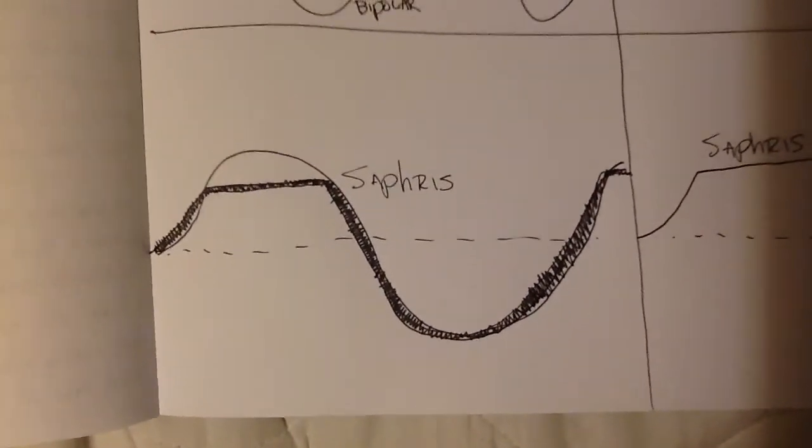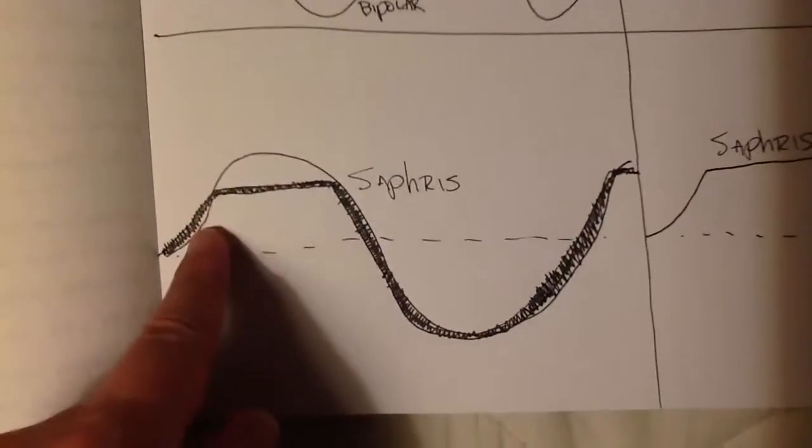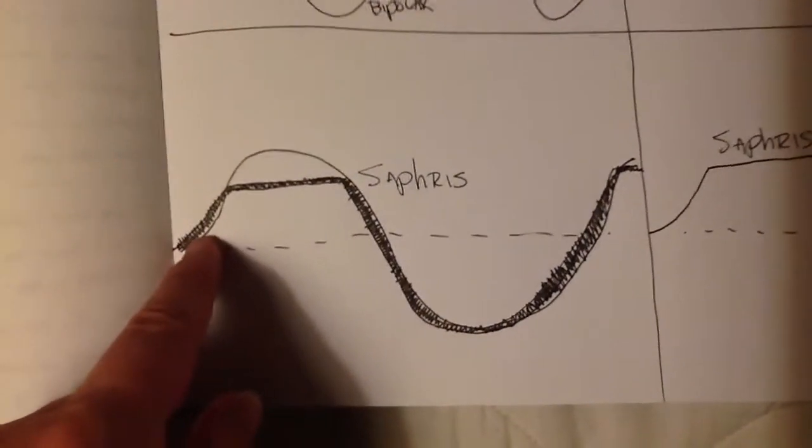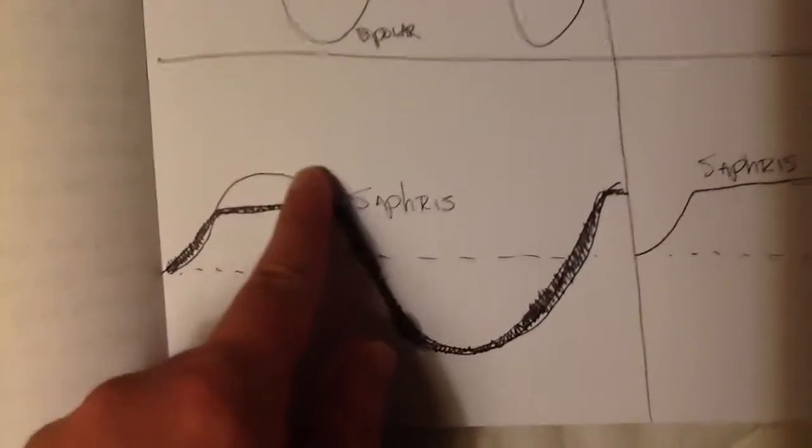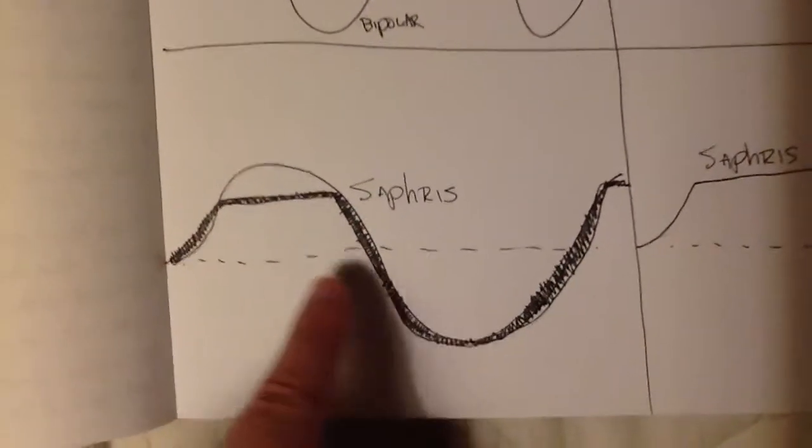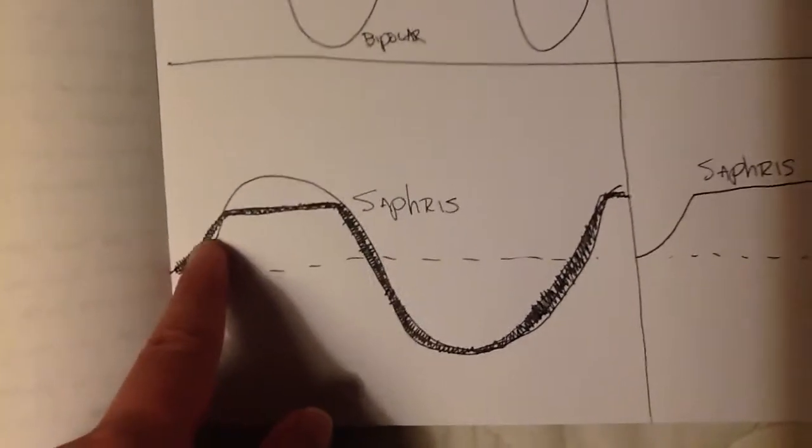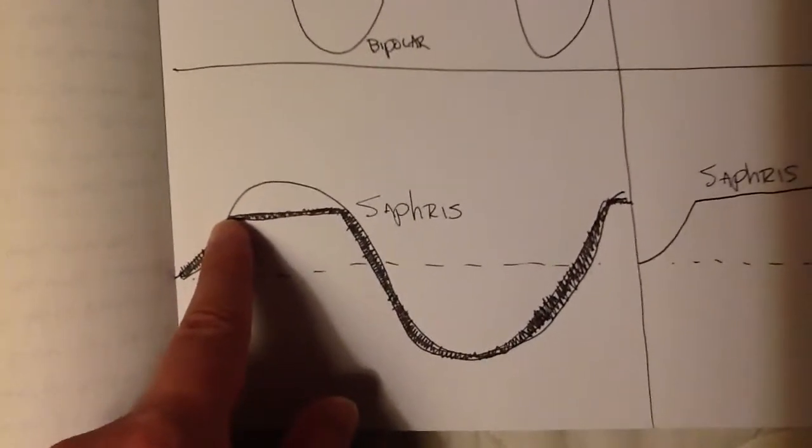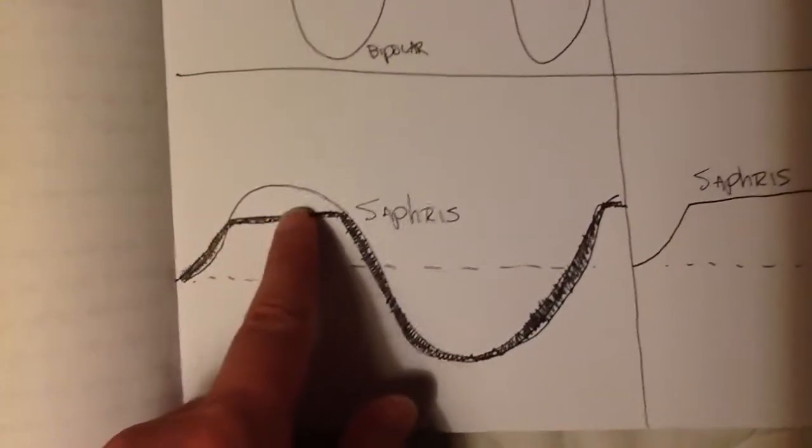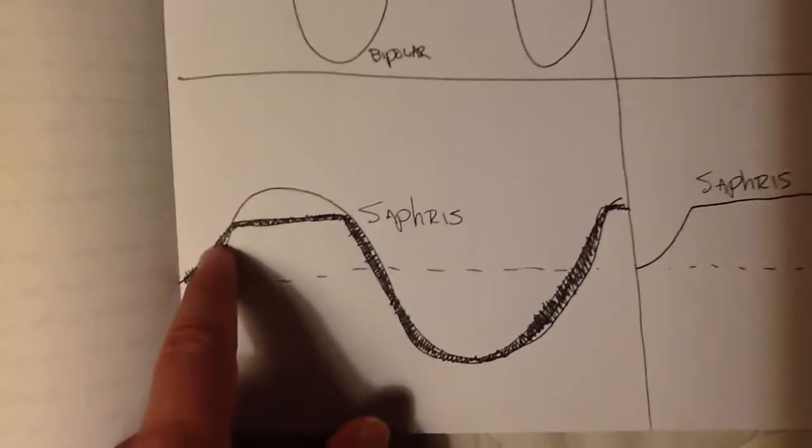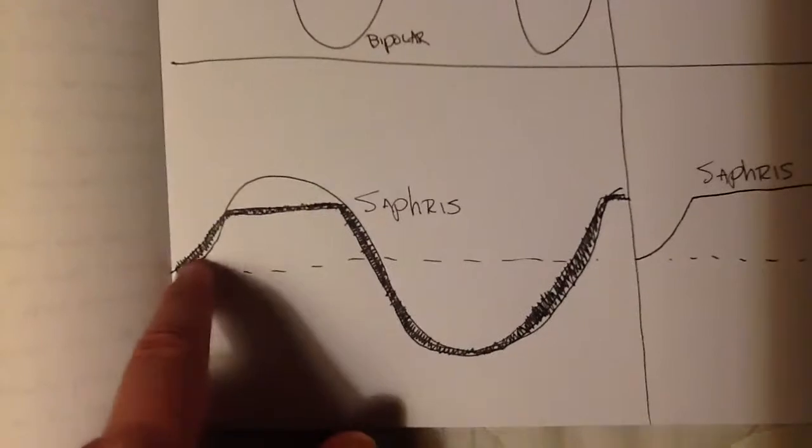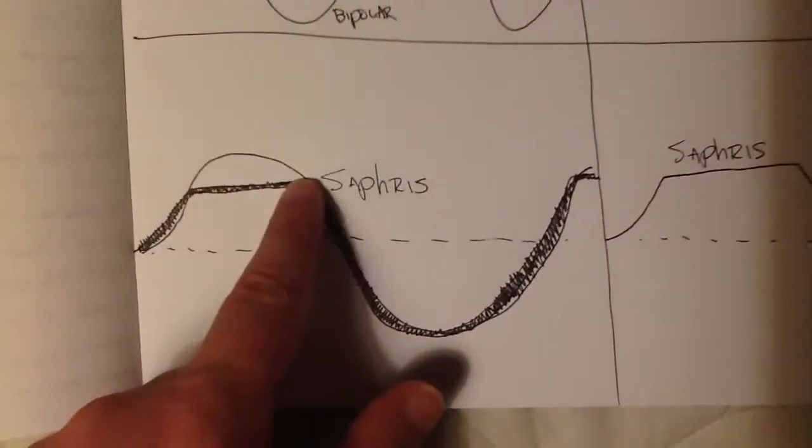I think of it as kind of a chopping off of the top of one of these hills. So instead of, without Saffiris, instead of the curve going up here like that, with Saffiris, the mania is targeted, and instead of having an upward curve, you basically just have a straight line. So you don't experience that manic swing. You experience a flatter affect.